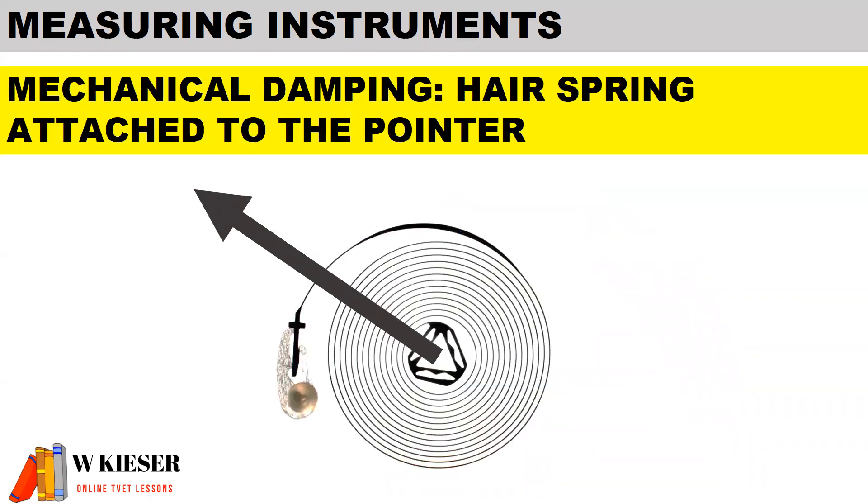For mechanical damping, the pointer is attached to a hair spring. Whenever there is no measurement taking place, the hair spring will cause the pointer to move back to the off position.